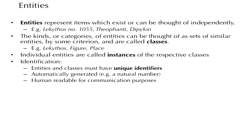There is a need to uniquely identify entities, whether they are classes or instances. Unique identifiers are usually automatically generated by the system managing the information, so we don't really need to worry about them. But for human readability and communication purposes, we also introduce unique names — real-world names given by us purely for communication purposes.